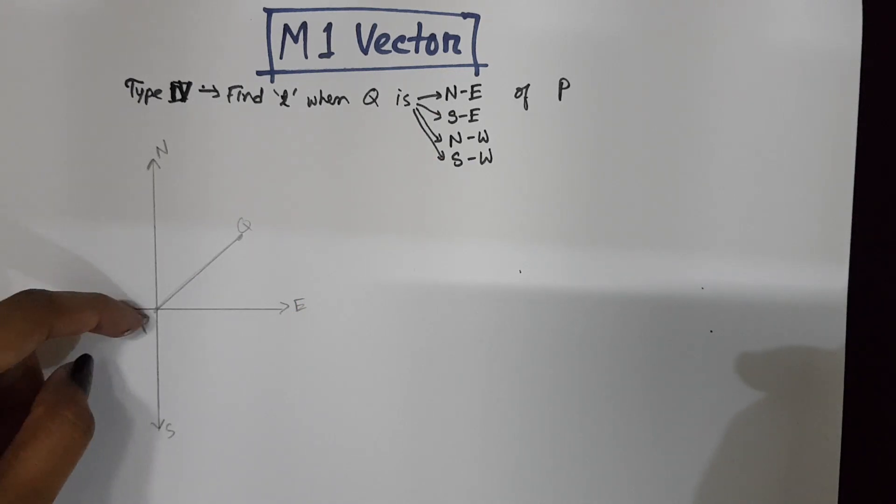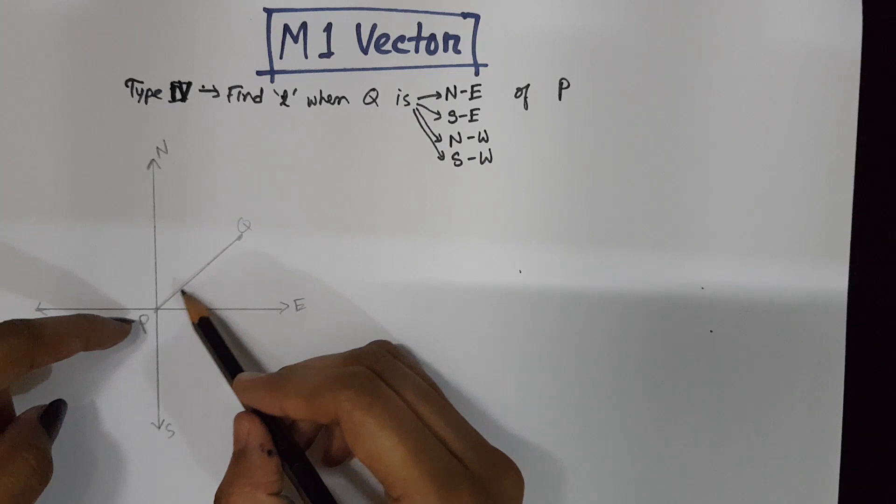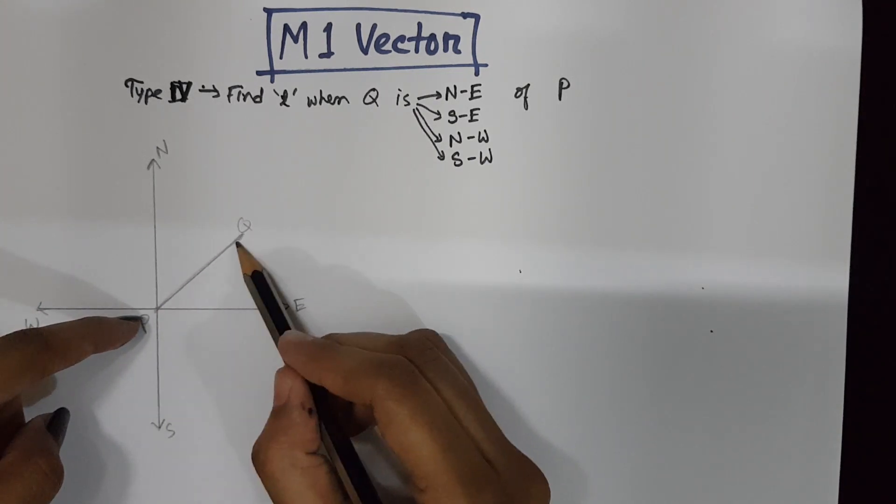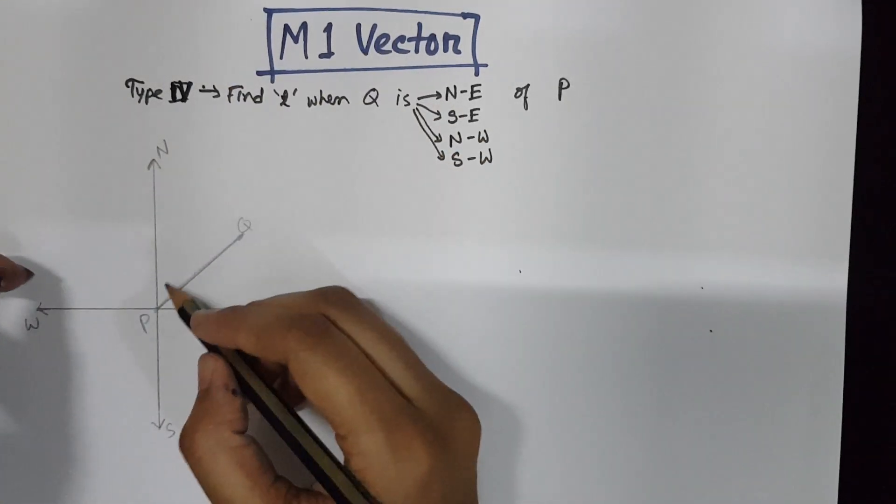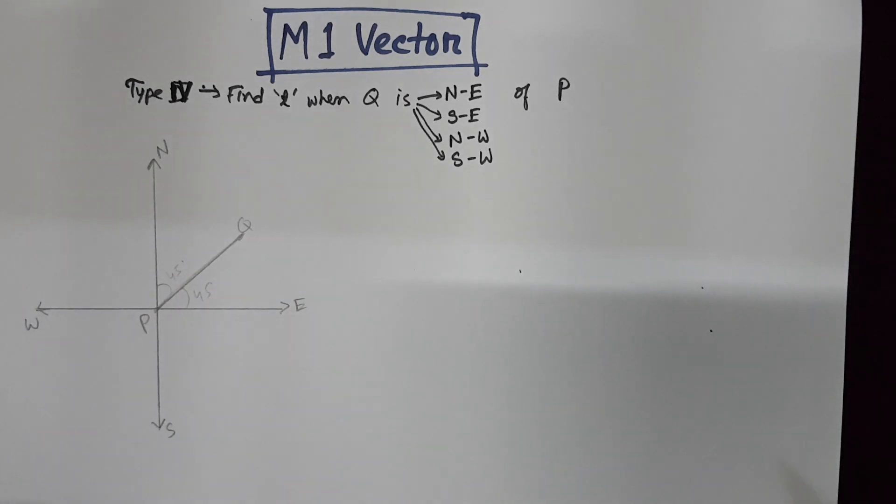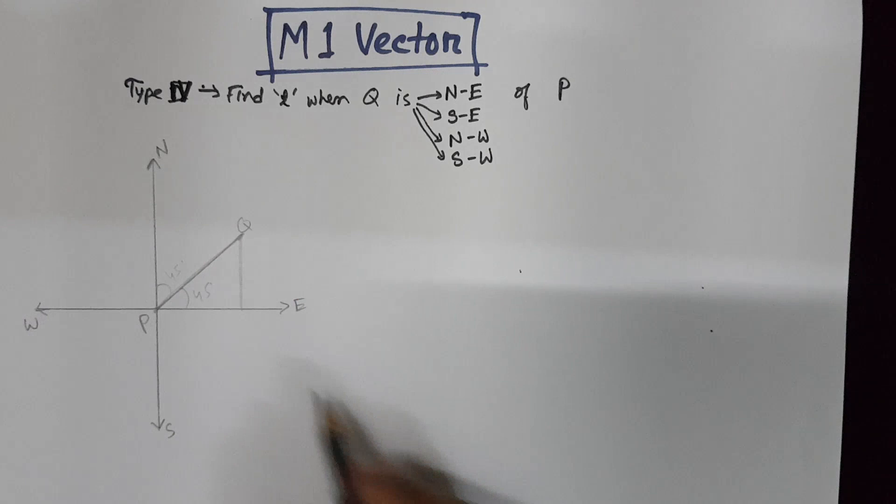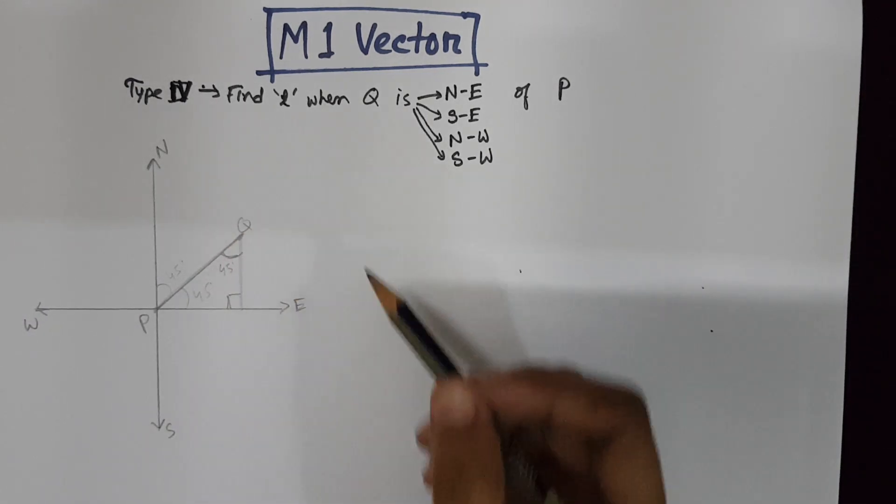Suppose the particle is due north-east, it means the particle has moved. The distance between the particles, that is the line PQ, is in between north and east. In this case, the angle is always 45 degrees. If we draw a right-angle triangle, this is your 90 degrees, that angle will also be 45.